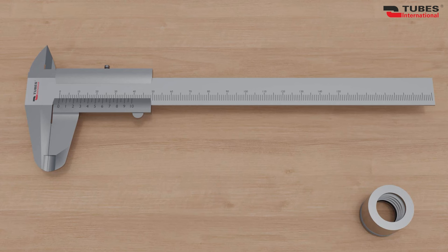Hello. Today we will learn how to use a caliper correctly. A caliper is a precise measuring tool that allows you to measure the external and internal dimensions of objects, as well as their depth. Using it correctly is key to accurate work.